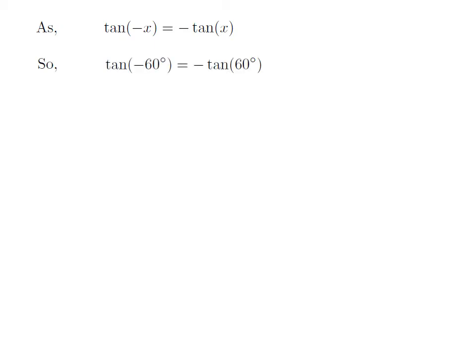Let us apply the above identity for tangent of minus 60 degrees. Here, x is 60 degrees. So tangent of minus 60 degrees is equal to minus tangent of 60 degrees.